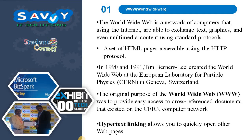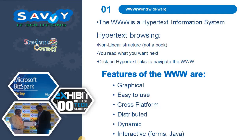In 1990 and 1991, Tim Berners-Lee created the World Wide Web at the European Laboratory for Particle Physics. The original purpose of the World Wide Web was to provide easy access to cross-reference documents that existed on the CERN computer network. Hypertext linking allows you to quickly open other web pages. Hypertext browsing is a non-linear structure — you read what you want next and click on hypertext links to navigate from one page to another.